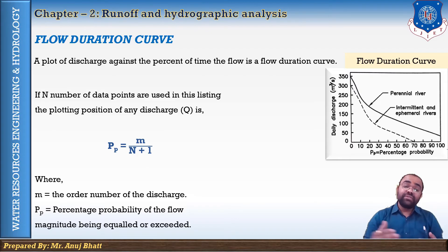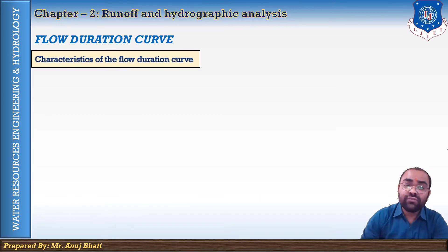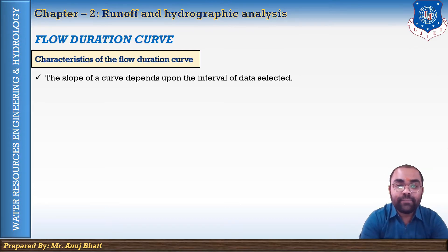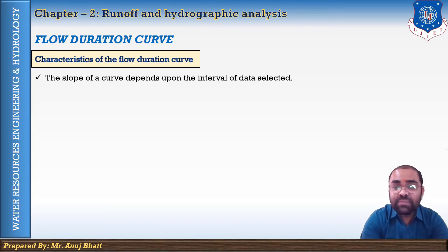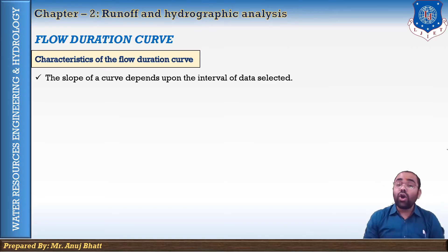The important characteristics of the flow duration curve are as follows. The first is the slope of the flow duration curve, which depends upon the interval of the data selected. For example, a daily stream flow data gives a steeper curve than a curve based on monthly data for the same stream, due to the smoothening of small peaks in the monthly data.